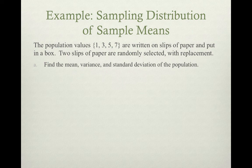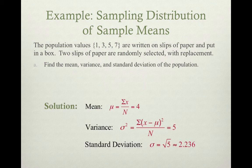The population values 1, 3, 5, and 7 are written on slips of paper and put in a box. Two slips of paper are randomly selected with replacement. Find the mean, variance, and standard deviation of the population.